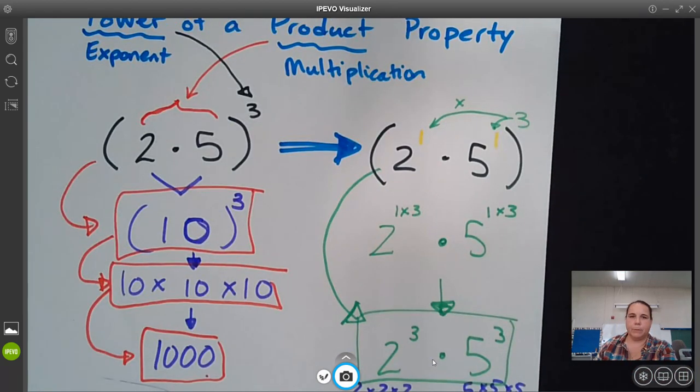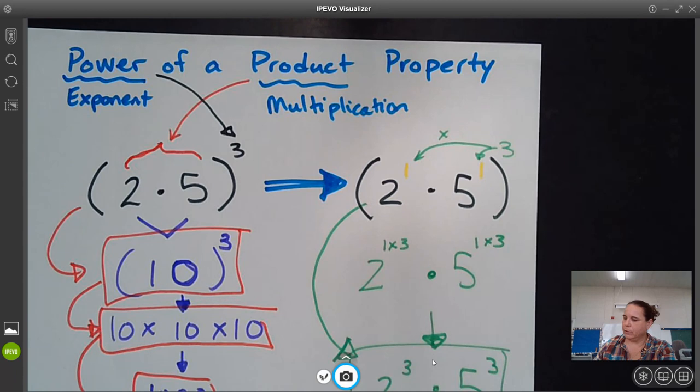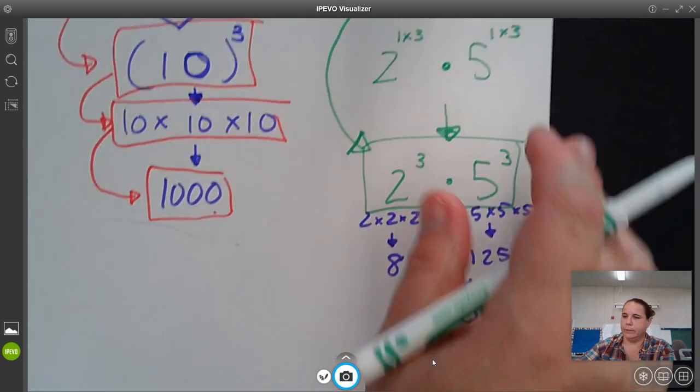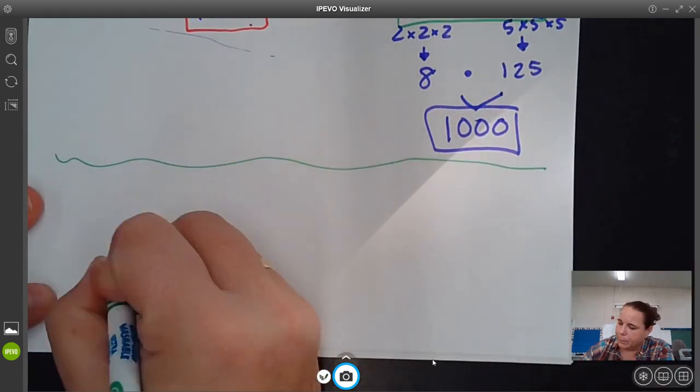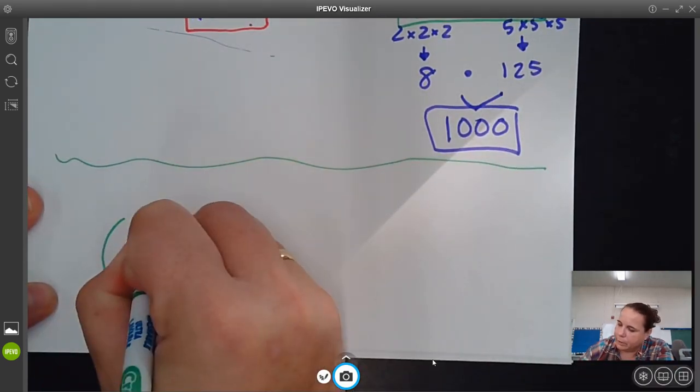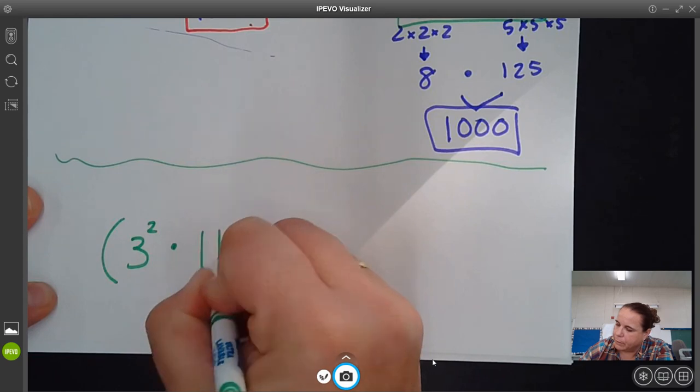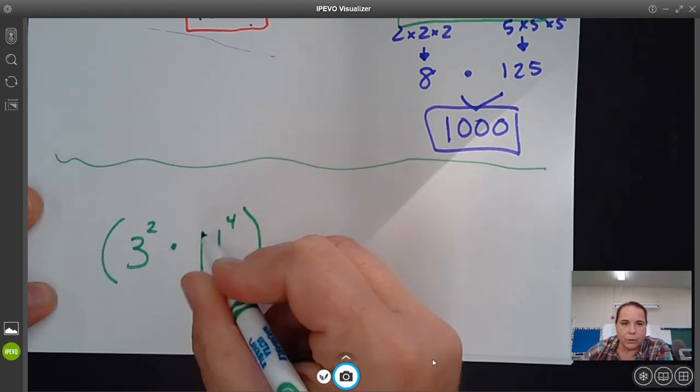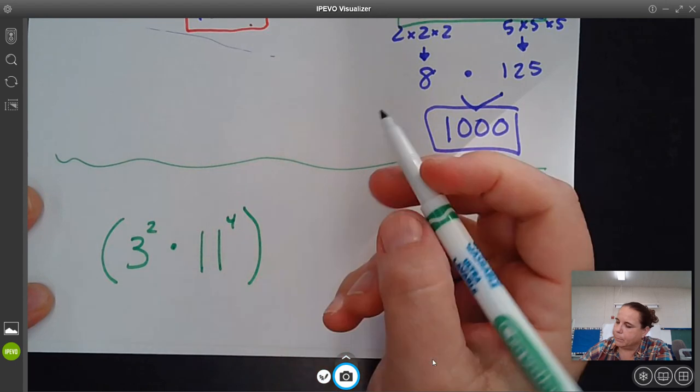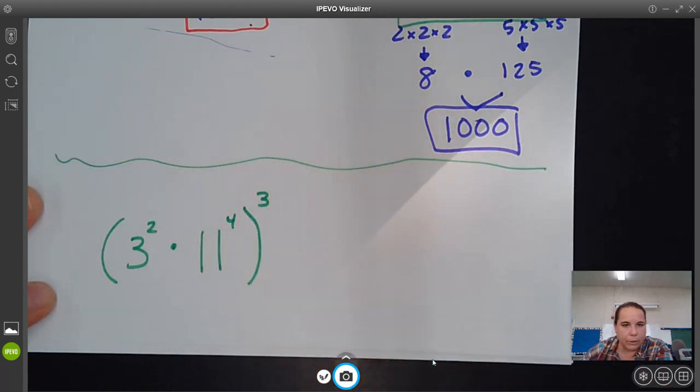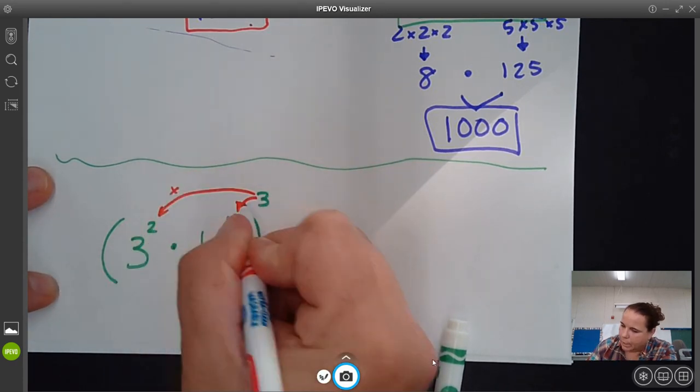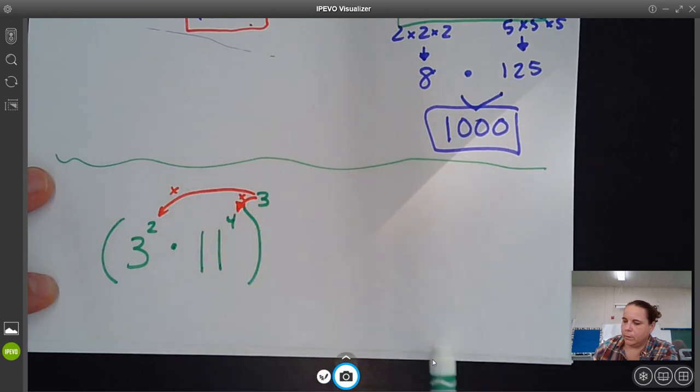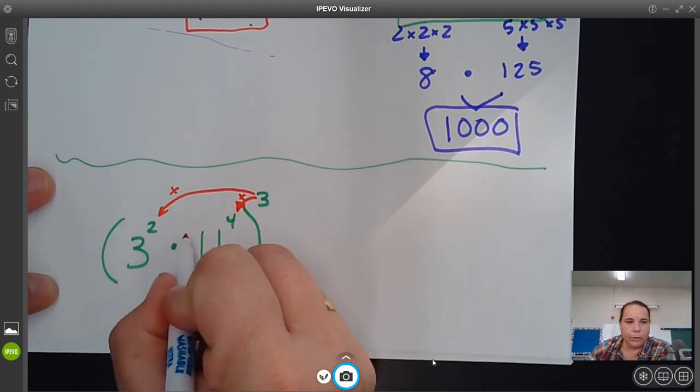Okay, so the power of a product property, I'm going to give you another example down below. It doesn't have quite so much writing on it, but the power of a product property is going to say something. If you have 3 to the second power times 11 to the fourth power, and you're going to take all of those and have them to the third power, the rule is that you multiply that exponent onto the other exponents.